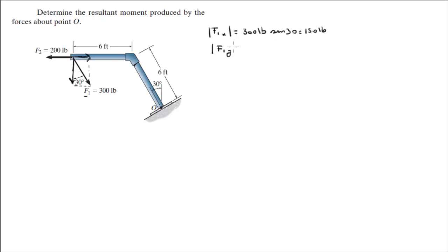The Y component, the one going straight down, has a magnitude of 300 pounds times the cosine of 30 degrees, and that means it's equal to 260 pounds.